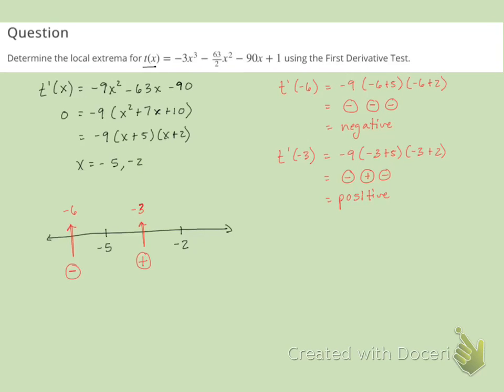And then I'm going to pick a value greater than negative two. I like to pick zero if I can. It makes the calculation very easy. So we've got negative nine, zero plus five, and zero plus two. So we will have a negative nine is always negative. Positive five and a positive two. And therefore, we'll have an overall negative output here.